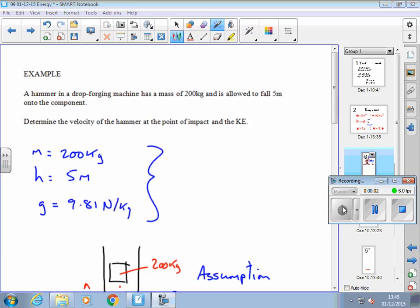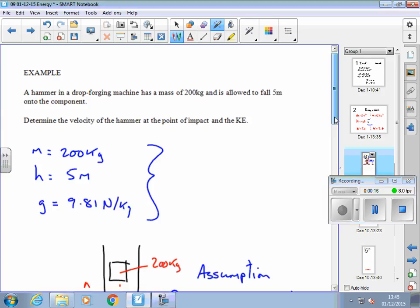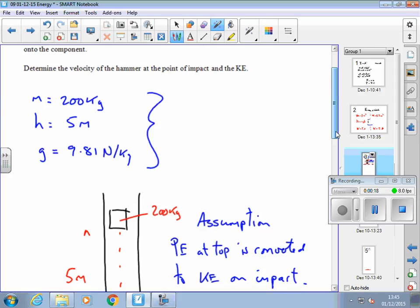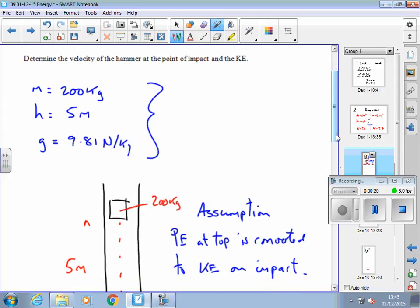This example is perfect for demonstrating the relationship between kinetic energy and potential energy of an object. We have a hammer in a drop forging machine with a mass of 200 kilograms and it's allowed to fall 5 meters onto the component. Determine the velocity of the hammer at the point of impact and the kinetic energy.